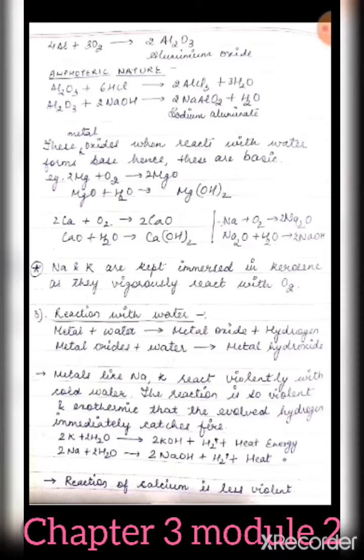Al2O3 when reacts with HCl forms AlCl3 plus H2O, and it also reacts with NaOH (a base): Al2O3 plus NaOH gives NaAlO2 plus H2O. AlCl3 is aluminium chloride and NaAlO2 is sodium aluminate — both are salts. The same is the case with zinc. So both are considered amphoteric oxides.